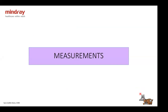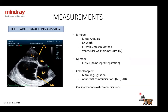Now starting with measurements. From the right parasternal long axis four-chamber view, with B-mode we measure the mitral annulus, left atrium width, ejection fraction using the Simpson method, and ventricular wall thickness. With M-mode we do the E-point septal separation (EPSS). With color Doppler we see mitral regurgitation and abnormal communications like ventricular or atrial septal defects. With continuous wave we can measure any abnormal communications found.